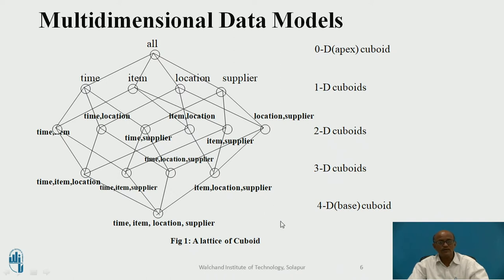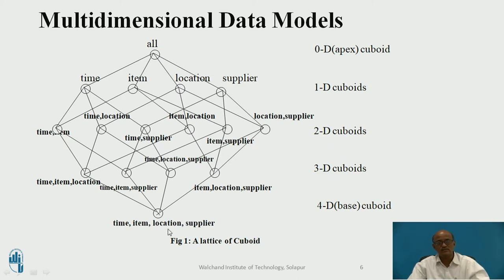This is how data can be represented in multidimensional form — we can find out the sales data of a particular item, at what time, at which location, and who was the supplier. All that data can be shown at different levels.